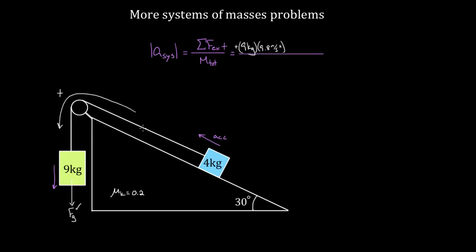There's no other forces that make this system go, so now I'm only gonna subtract forces that resist the acceleration. The gravity of this four kilogram mass resists acceleration, but not all of the gravity — it's only the component along the incline which resists the motion of this system. That component is mg·sinθ. If that doesn't make sense, look at the videos on inclines — the component of gravity that points down an incline, parallel to the surface, is mg·sinθ. So I'm gonna subtract four kilograms times 9.8 meters per second squared times sine 30 degrees.